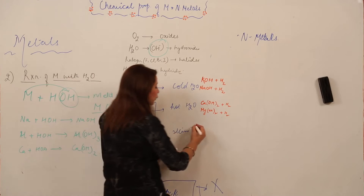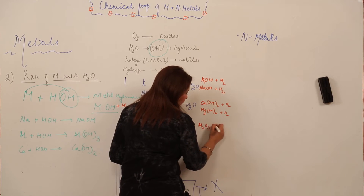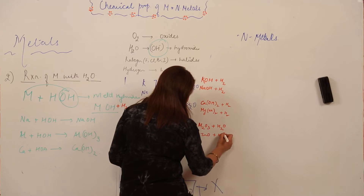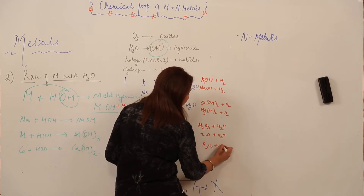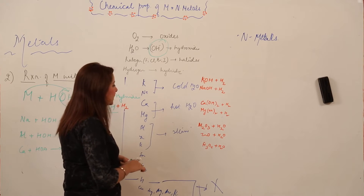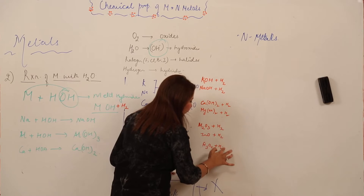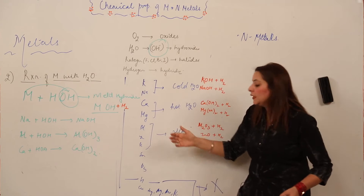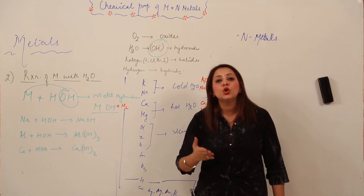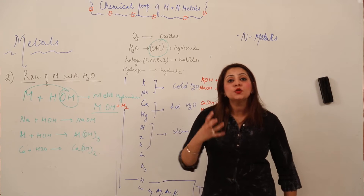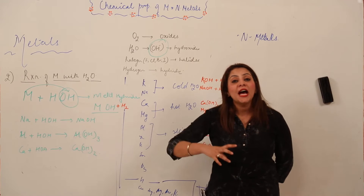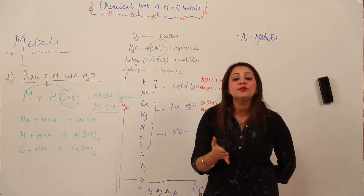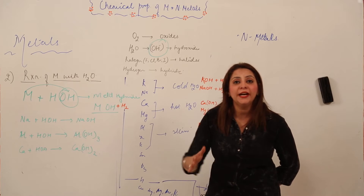And when we react them with steam — that is aluminium, zinc, and iron — they do not form their hydroxide. Because in superheated steam, the oxygen content is too high and moreover their hydroxides are not so stable as compared to their oxides. So they react with steam but lead to the formation of their oxides instead of hydroxides.